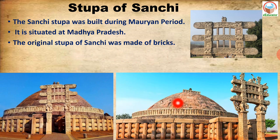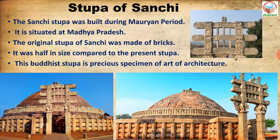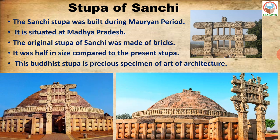The original Stupa of Sanchi was made of brick. It was half the size compared to the present Stupa. Later it was renovated to its current form. This Buddhist Stupa is a precious specimen of art and architecture. You can see here the entrance and the Torans — the Stupa was constructed in a very well-planned manner.